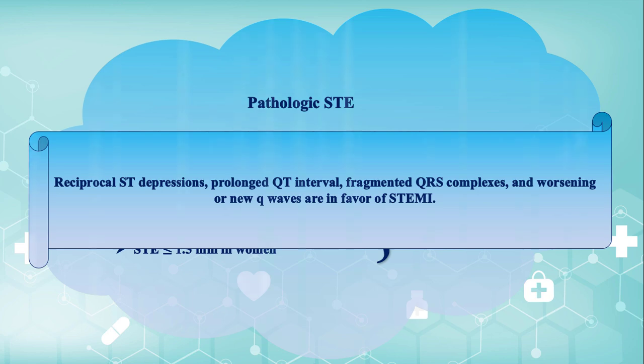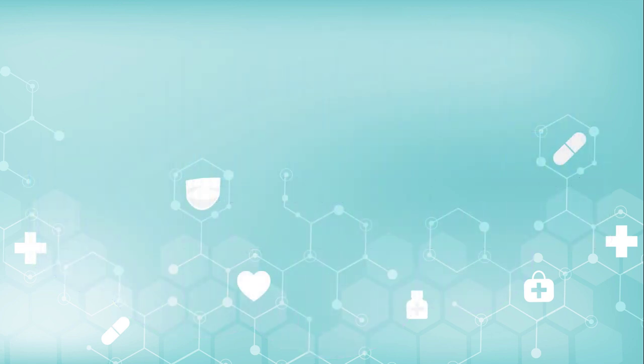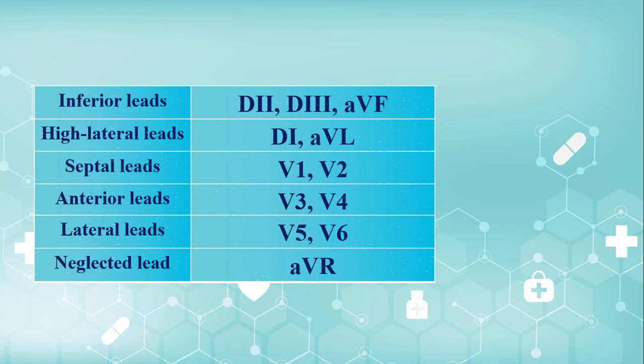The surface electrocardiogram in ST elevation MI provides notable information about the ischemic area of the left ventricle. The presented table demonstrates the relationship between 12-lead EKG and cardiac anatomy. Leads D2, D3, and AVF view the inferior surface, known as inferior leads. Leads D1 and AVL view the high lateral surface, known as high lateral leads. V1 and V2 view the septal surface; V3 and V4 view the anterior surface; and V5 and V6 view the lateral surface. Note that AVR is the so-called neglected lead.